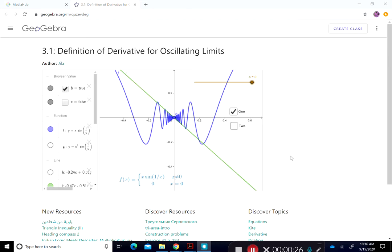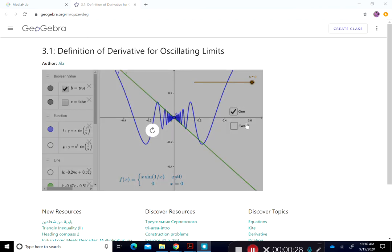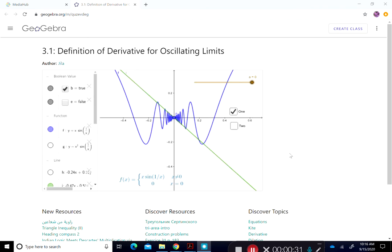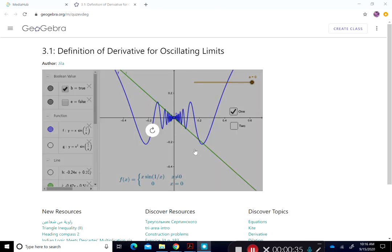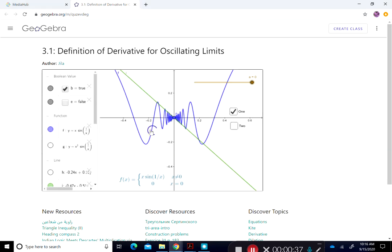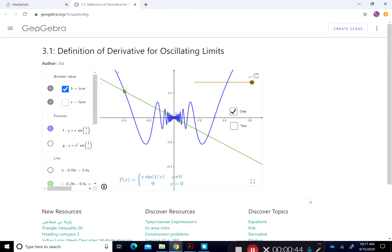People look at any oscillating function and they think, well, this is oscillating too much so there is no derivative. And in this case you can see that this actually works that way. If you have x sine of 1 over x, you look at the secant line and you see the secant line oscillates too fast around point zero, so the derivative does not exist at point zero.